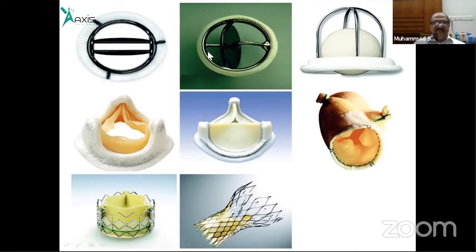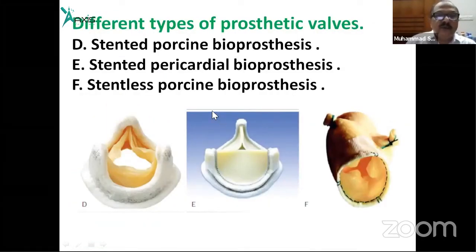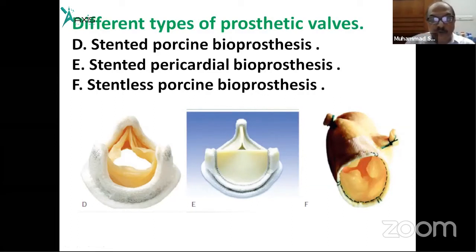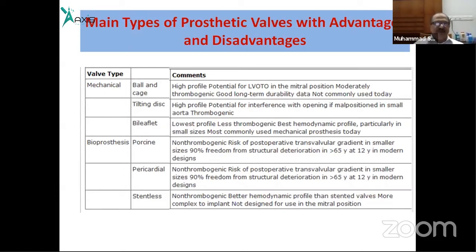Mechanical valves have a better durability profile. Bioprosthesis types include porcine bioprosthesis, stented pericardial bioprosthesis, and others. The key advantage of bioprosthesis is that lifelong anticoagulation is not required, whereas mechanical prostheses require lifelong anticoagulation.